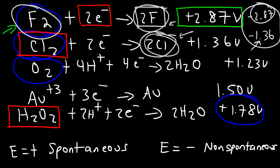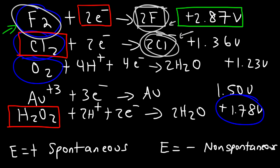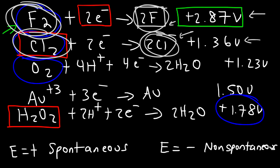When comparing the ability of an element or ion to perform a task, look at which one has a more positive cell potential — the one with the highest positive cell potential can do the job better. Fluorine is a stronger oxidizing agent than chlorine because 2.87 is more positive than 1.36. Chloride is a stronger reducing agent than fluoride because negative 1.36 is more positive than negative 2.87.